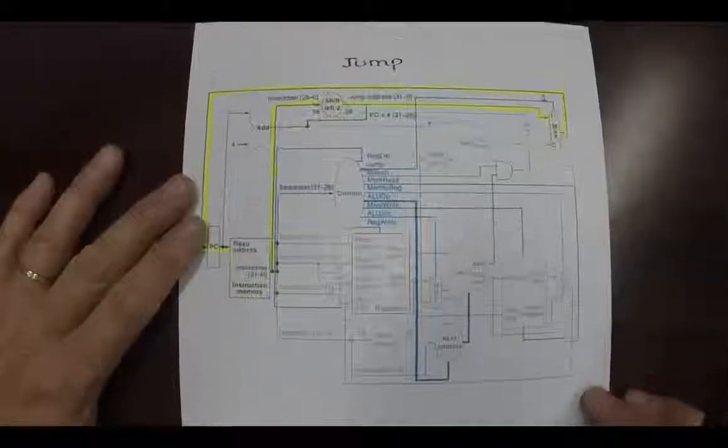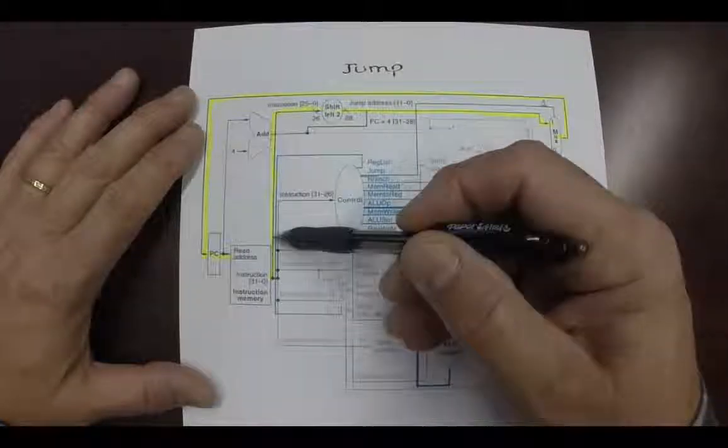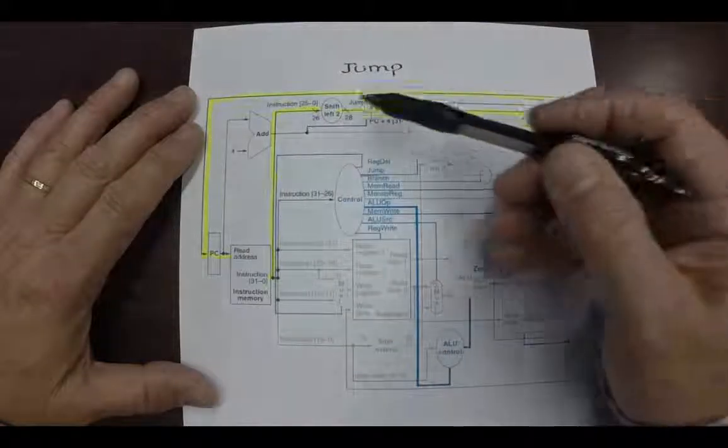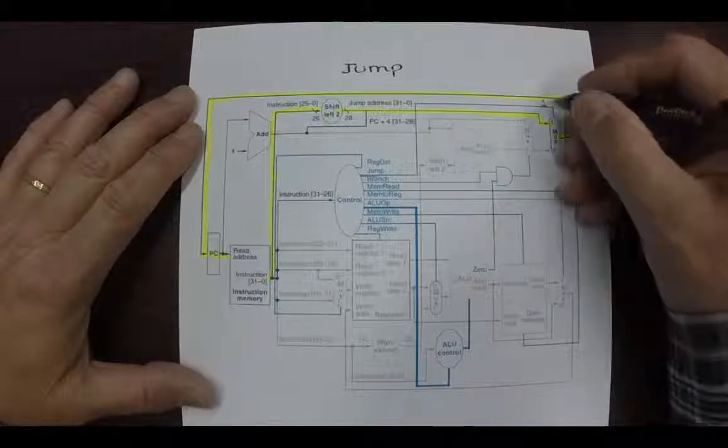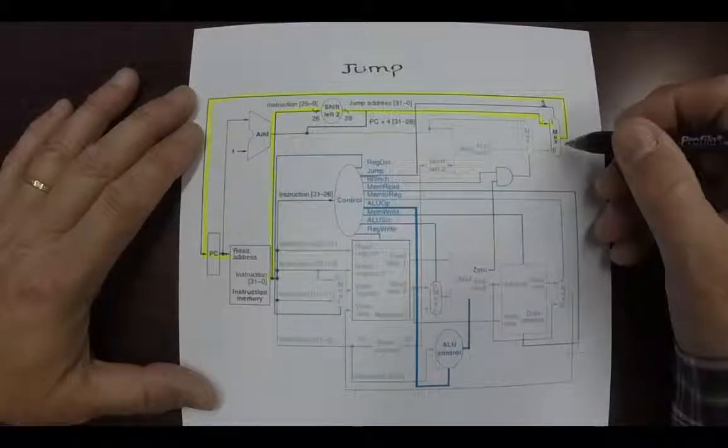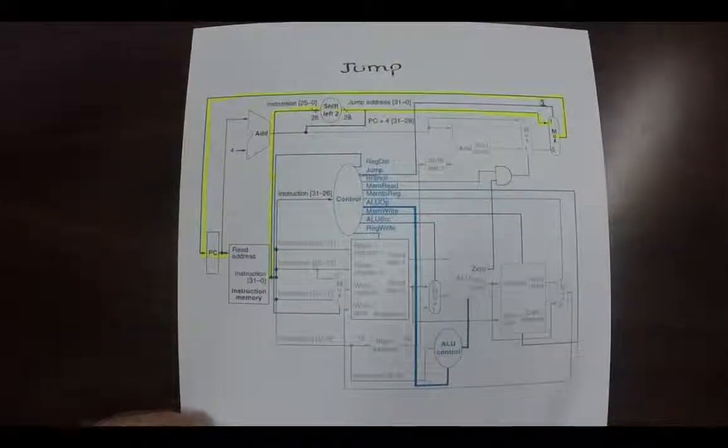Jump, the easiest instruction of all. Here we see the instruction's 26 bits is sent up here, it's extended to 28 and sent on. The MUX right here is turned 1 indicating that it is a jump, and then the program counter is updated and then it just branches to that instruction.